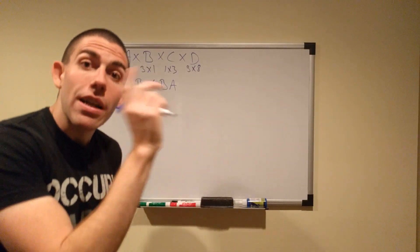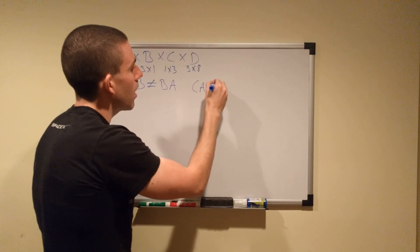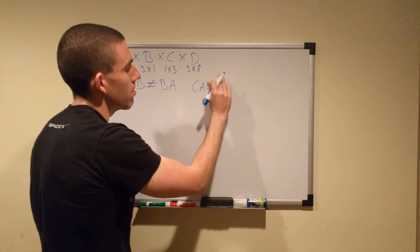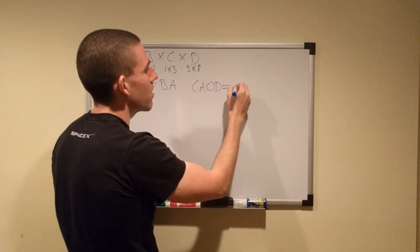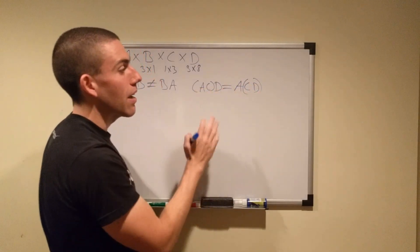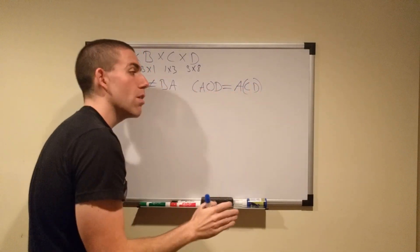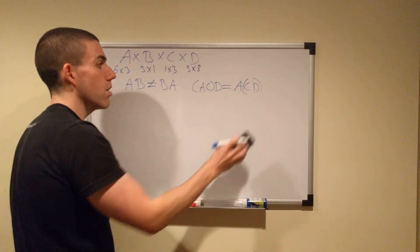It's not commutative, but it is associative. So you can say something like A times C times D is the same thing as saying A, C, D, where you multiply the product of C and D by A. Same thing. As long as you're not changing the order, you're not permuting anybody, you're good to go.